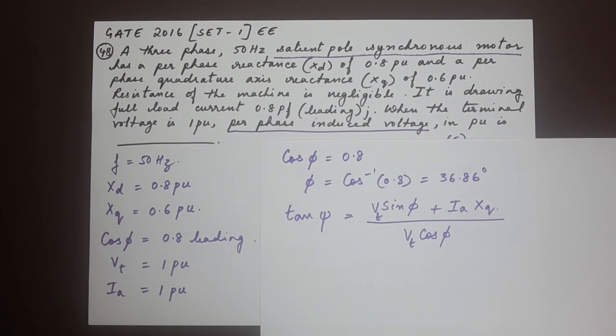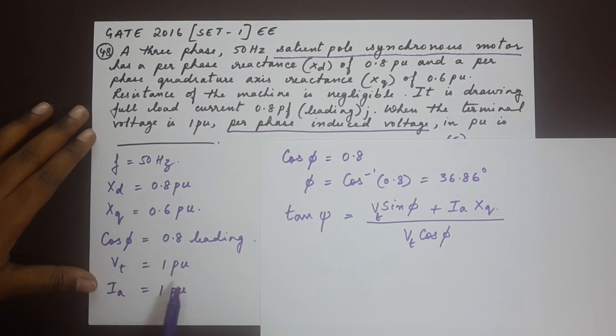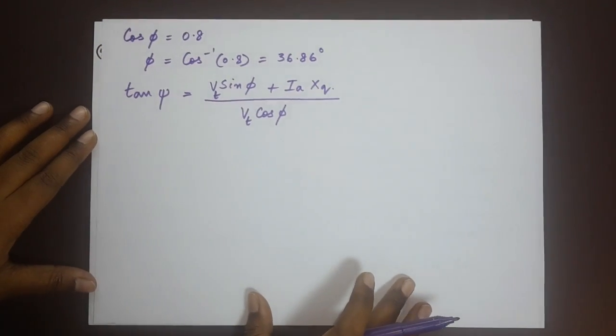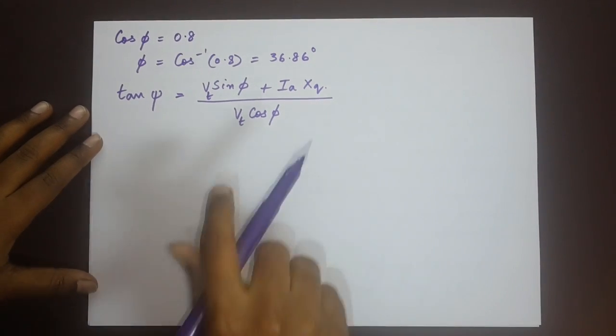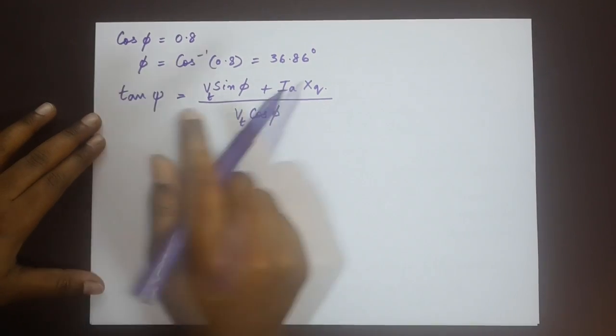You should know that V is the terminal voltage given to us, Vt, and Ia is also 1 PU though it has not been mentioned that Ia is 1 PU. We take it as 1 per unit because the question mentions that it is drawing a full load current. So in considering the full load current we always take a whole number of 1.